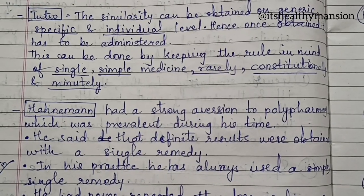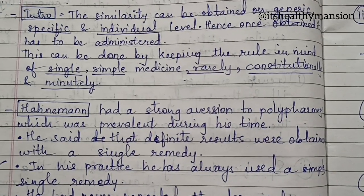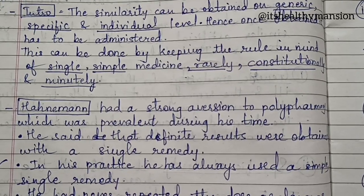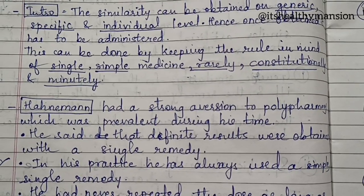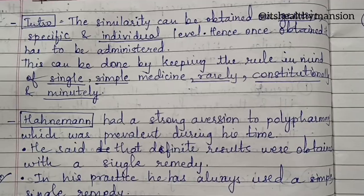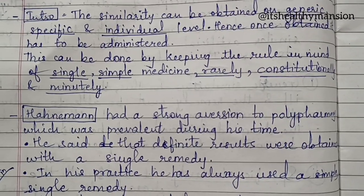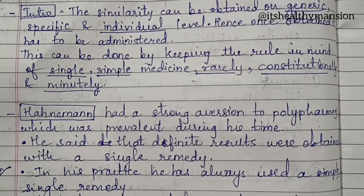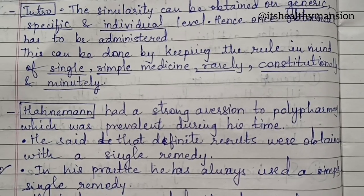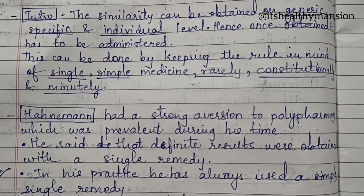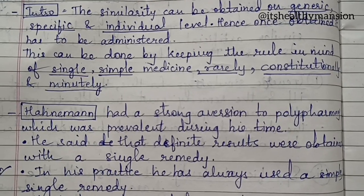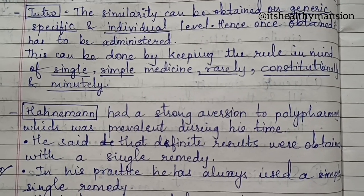Introduction: the similarity can be obtained on generic, specific, and individual level. Hence, once obtained, it has to be administered. This point we have learnt in the chapter on selection of remedy by Richard Uges. He says the same thing — that the similarity can be obtained on generic, specific, and individual level.